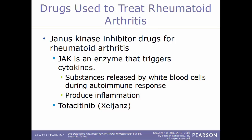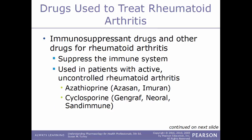Another type of drug used to treat rheumatoid arthritis is Janus kinase inhibitors, also known as JAK inhibitors. Janus kinases are enzymes that help trigger cytokines, which are released by white blood cells during an autoimmune response and produce inflammation. By inhibiting Janus kinases, the amount of inflammation is limited. An example of this kind of drug is tofacitinib, sold under the trade name Xeljanz.